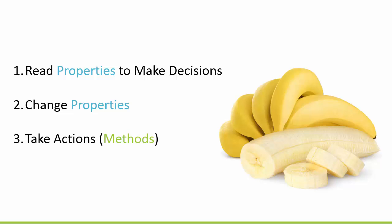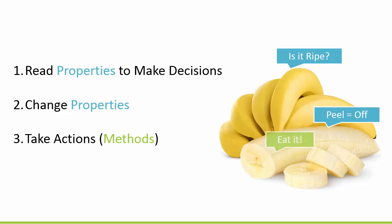I have this example of a banana. We do three different things with objects: we read properties to make a decision — like, is the banana ripe? We can also change properties — maybe we want to take the peel off the banana. And then we can take actions — we can eat the banana. So: objects, change their properties, and take actions with methods.